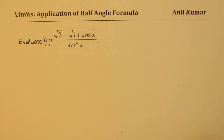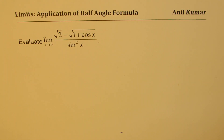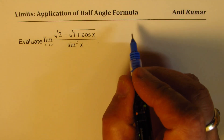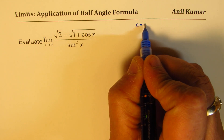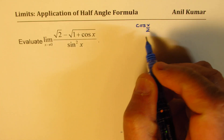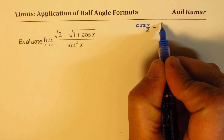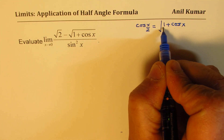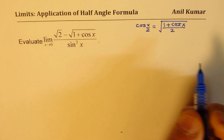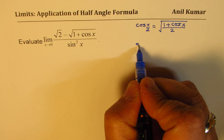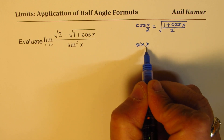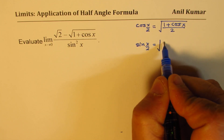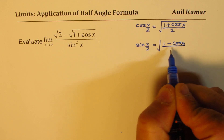Whenever you see this kind of situation you should be reminded of the half-angle formulas — that is the key. Let's write down the half-angle formulas first and then we'll solve this question. Cos(x/2) equals square root of (1 plus cos x) over 2. Similarly, sin(x/2) equals square root of (1 minus cos x) over 2.